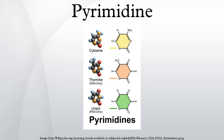In RNA, the complement of adenine is uracil instead of thymine, so the pairs that form are adenine–uracil and guanine–cytosine. Very rarely, thymine can appear in RNA, or uracil in DNA. Other than the three major pyrimidine bases, some minor pyrimidine bases can also occur in nucleic acids. These minor pyrimidines are usually methylated versions of major ones and are postulated to have regulatory functions.